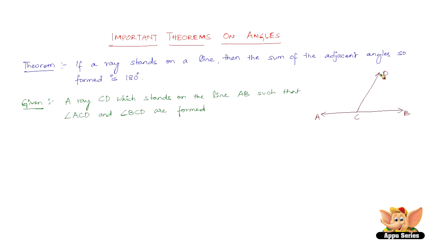That is angle ACD, that is this one, and then we have angle BCD, that is this one. So we have angle ACD and angle BCD. So we know that these are the adjacent angles. So what do we have to prove here is,